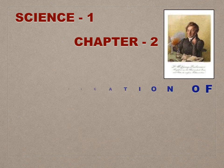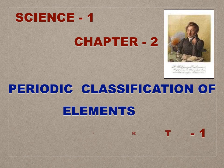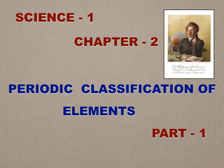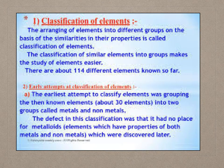Today we are going to study Science 1, Chapter 2: Periodic Classification of Elements, Part 1. We have learned in the previous standards that all atoms of an element are of only one type. Today, 118 elements are known to the scientific world; however, around the year 1800, only about 30 elements were known. The arrangement of elements into different groups on the basis of similarities in their properties is called classification of elements, and it makes the study of elements easier.